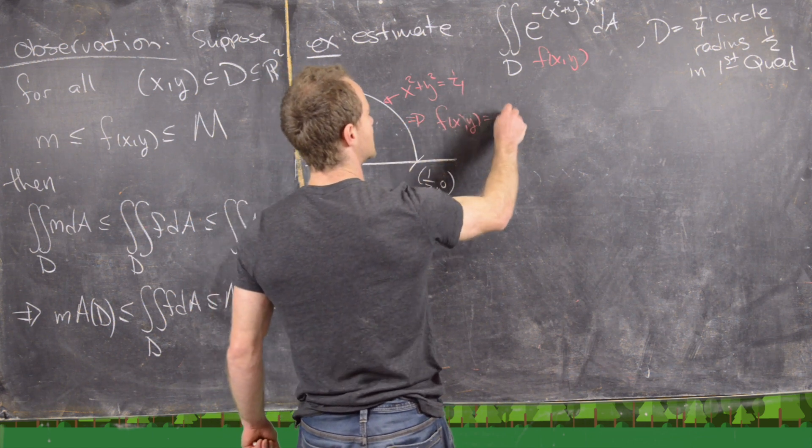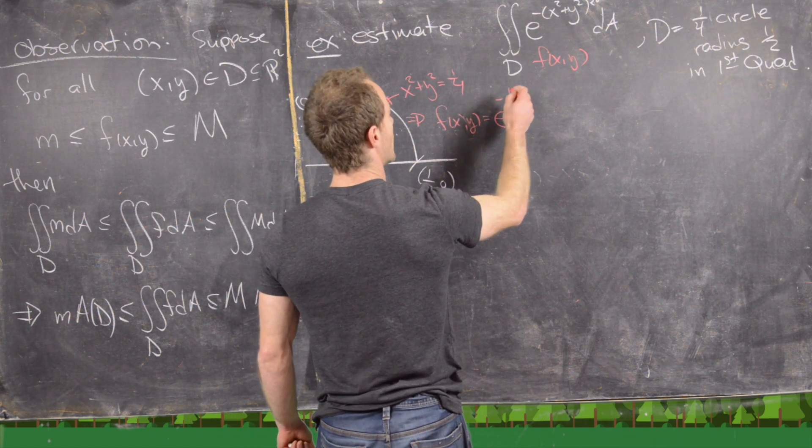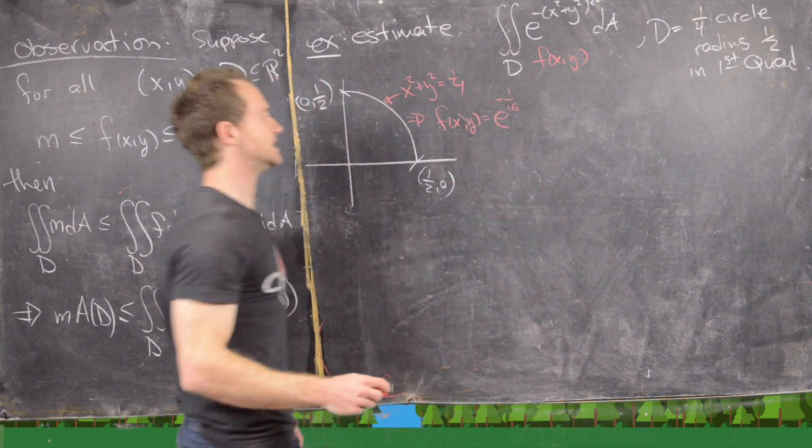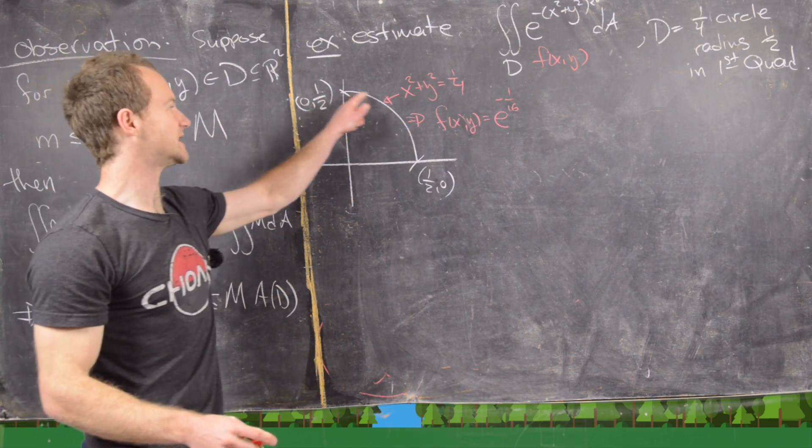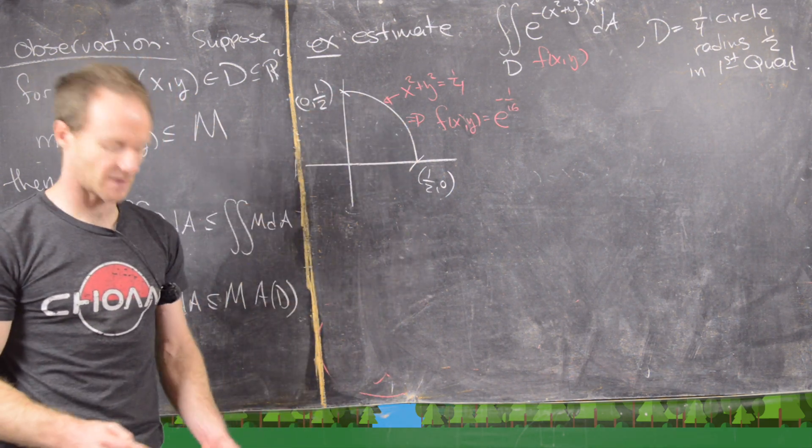is going to be equal to e^(-1/16) here, because it's e^(-1/4)². So that's going to be e^(-1/16). So it's a constant right here.